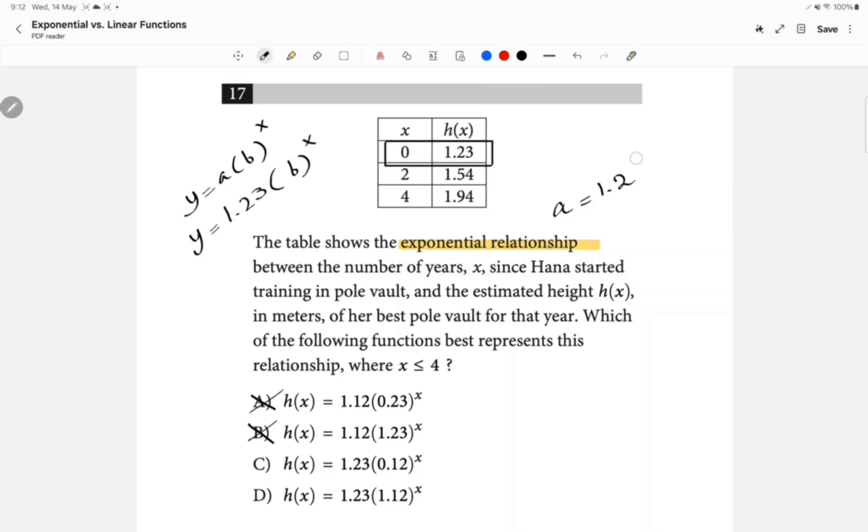How about the inside? Well, what's happening here is that when X goes from 0 to 2, H goes from 1.23 to 1.54. So what this means is, if I were to use information in the second row, that would mean that instead of Y, I'll put 1.54, then 1.23, and B, X is going to be 2. So that just means B squared. And now we can divide both sides by 1.23. And now we can square root both sides, 1.54 over 1.23. So B is equal to 1.118, which can be approximated to 1.12. So 1.12 has to be inside the brackets, which is choice D.